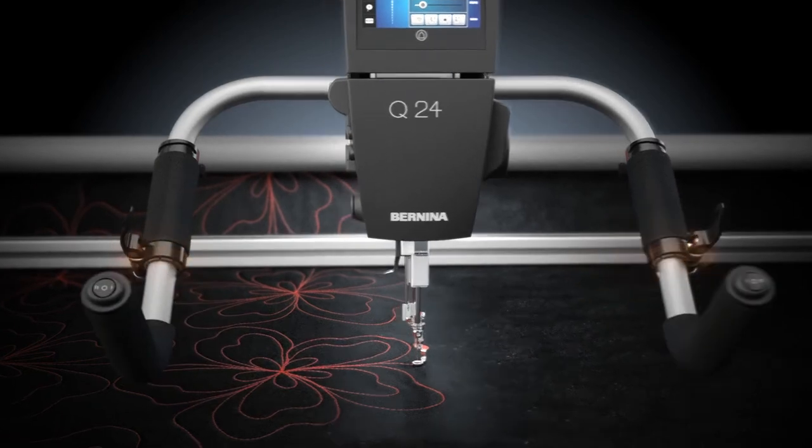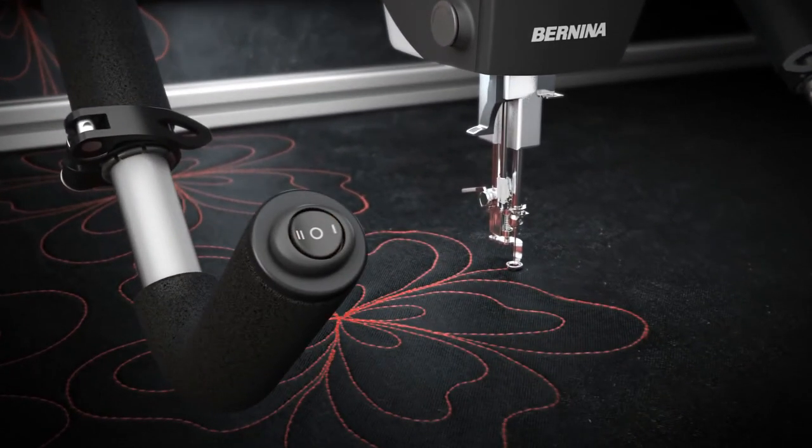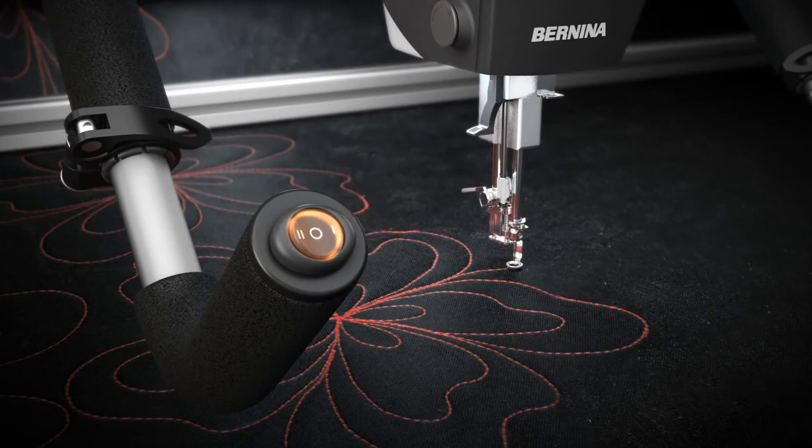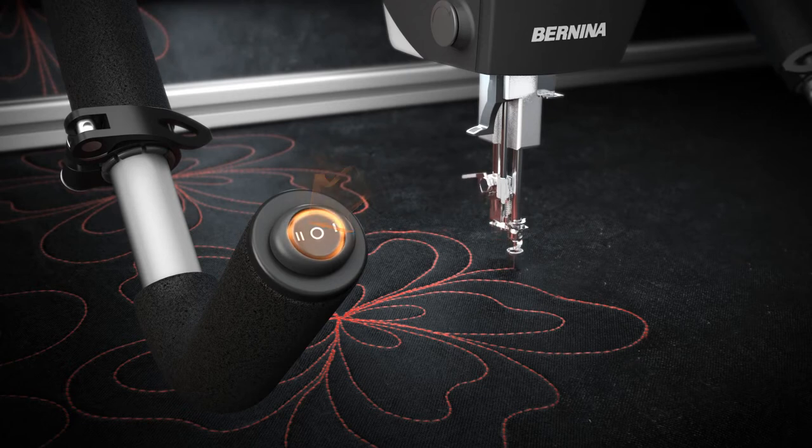The Bernina handles are equipped with programmable toggles. By simply pressing with your thumb, without letting go of the handles, you can start and stop the machine, change the needle or foot position, activate securing stitches or adjust the idle needle speed in manual mode.